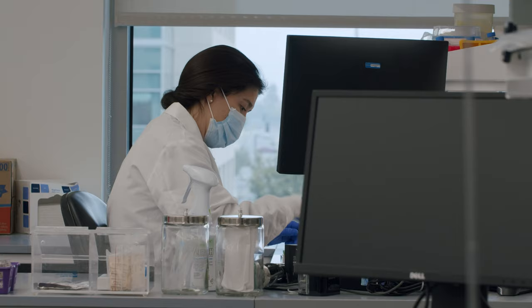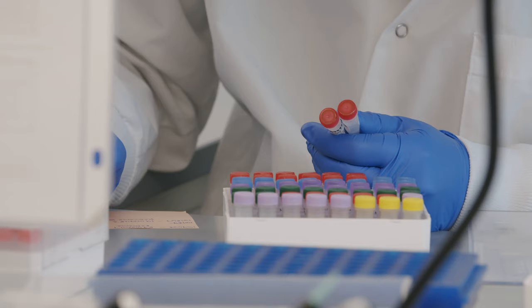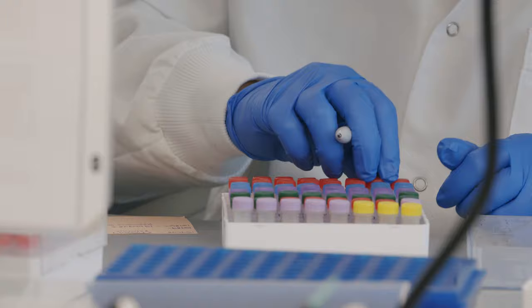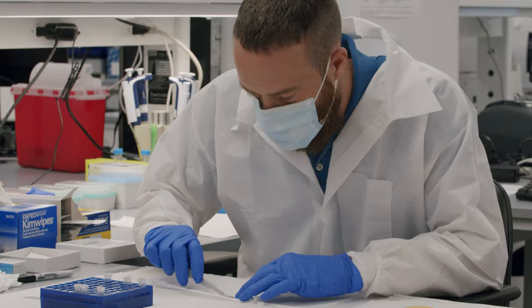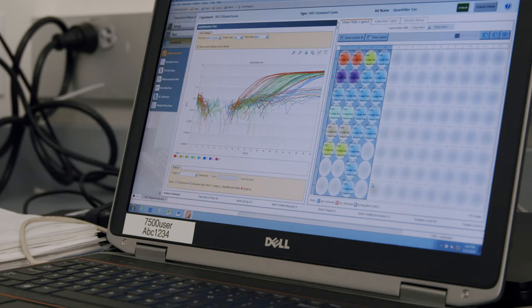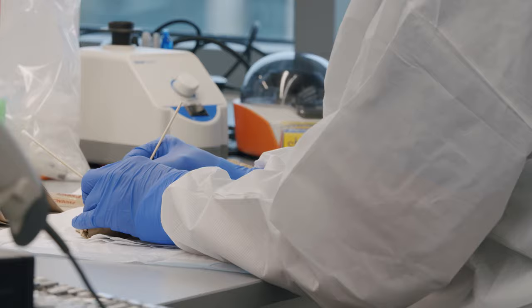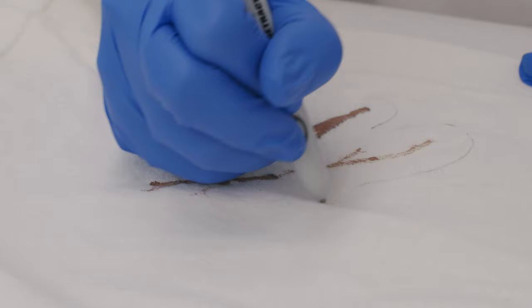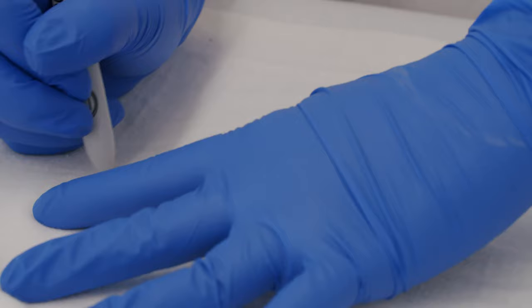My name's Alexis, and I'm a criminalist in the Forensic Biology section of the Sheriff's Crime Lab. The Forensic Biology Unit examines evidence for the presence of biological material. We develop DNA profiles, and we make comparisons to those DNA profiles. DNA is left behind at crime scenes in a variety of ways. You can get DNA from where someone touched something, from a body fluid, if they leave behind blood or saliva, anything really that your body comes in contact with.